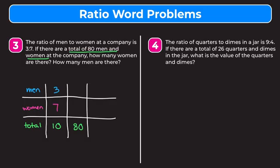How did we get from 10 to 80? We multiplied that part of our ratio by eight. To keep our ratio equivalent, we multiply each part by eight. Seven times eight gives us 56 women, and three times eight gives us 24 men. So there are 24 men and 56 women at the company.